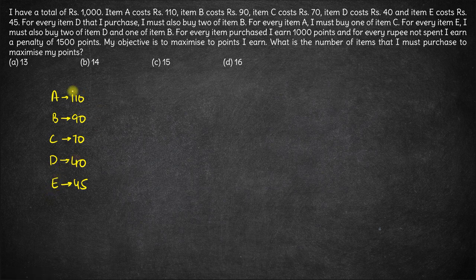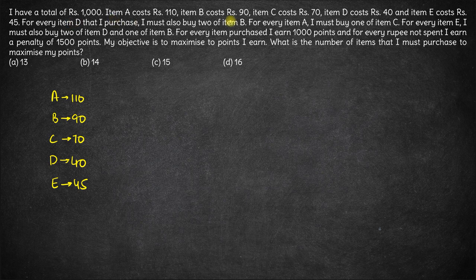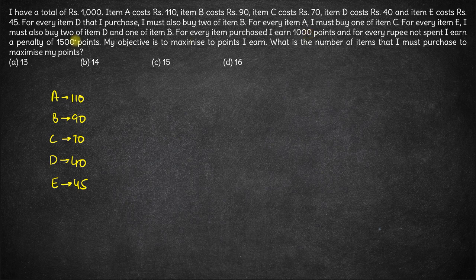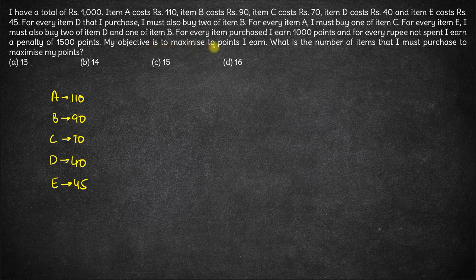Now there are certain conditions given to purchase any of these items. For each item that I purchase I earn 1000 points and for each rupee that I don't spend I get a penalty of 1500 rupees. My objective is to maximize the number of points that I earn. So how do I maximize the points I earn?